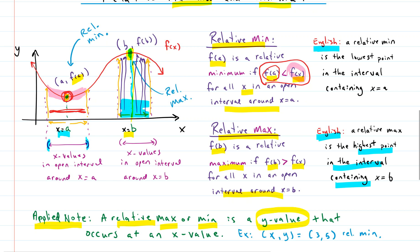It's important to note that sometimes in applied problems the relative maximum or minimum is actually just the y value — that's the answer they want, not the full x-y coordinate. For example, if we're given a relative minimum with coordinate (3, 5), the relative minimum occurs at x equals 3, but the actual minimum value of the function is 5 — y equals 5. Hopefully this helps; if it did, subscribe to the channel and thanks for watching.